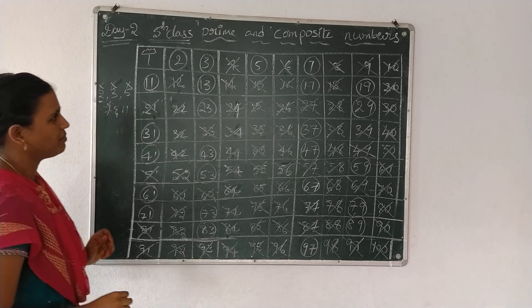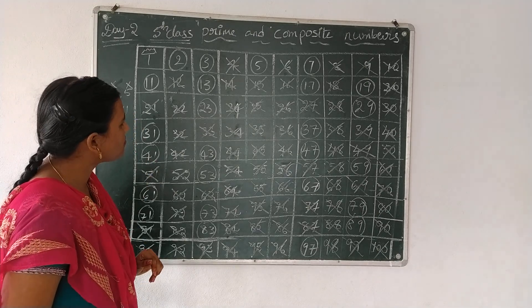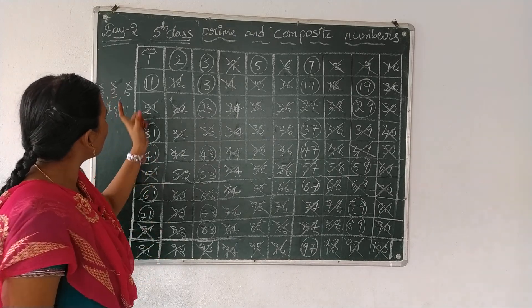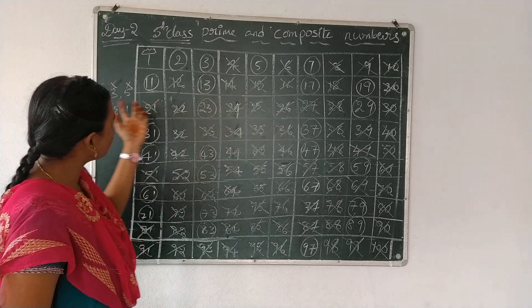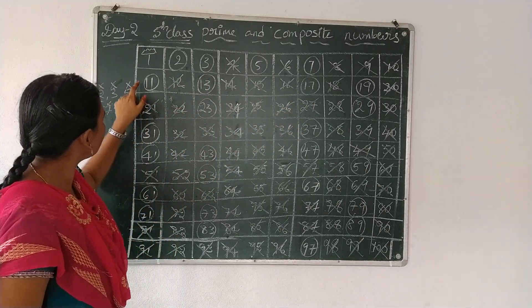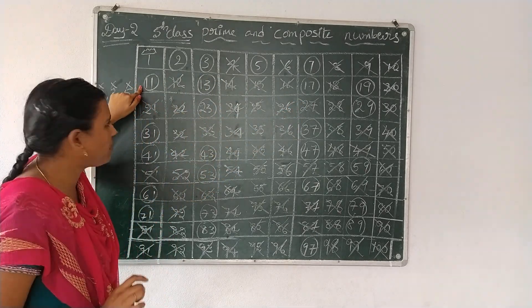Next, the 11 table. 11 times 10 is 110, which is beyond 100. 11 is a prime number.